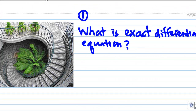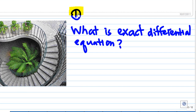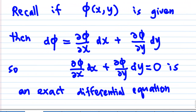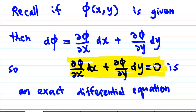First, what is an exact differential equation? Recall if we have a function phi of x, y, then the differential of phi is equal to the partial derivative of phi with respect to x dx plus the partial derivative of phi with respect to y dy. The term: partial derivative of phi with respect to x dx plus partial derivative of phi with respect to y dy equal to zero, is an exact differential equation.